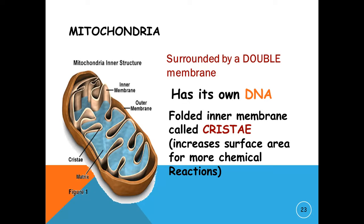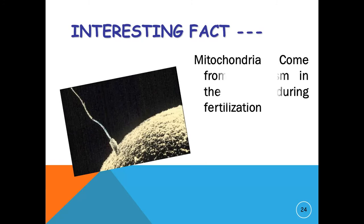Mitochondria is surrounded by a double membrane. It has its own DNA. Folded inner membranes are called cristae, which increase surface area for more chemical reactions. The interior is called the matrix. The interesting fact is mitochondria come from cytoplasm in the egg cell during fertilization.